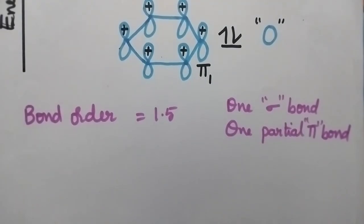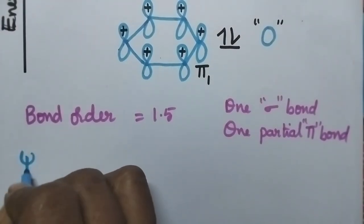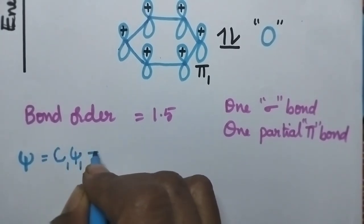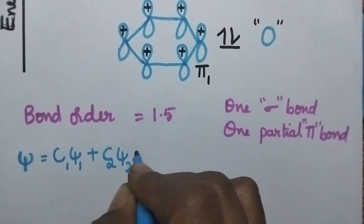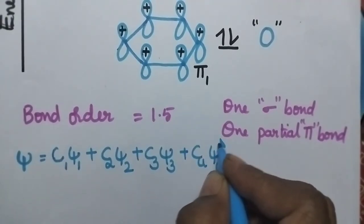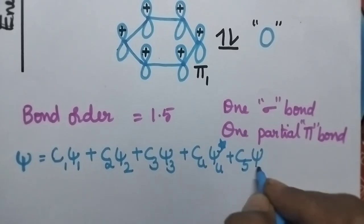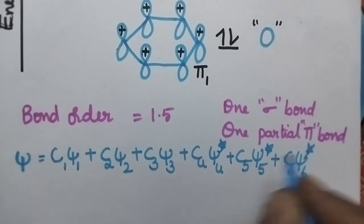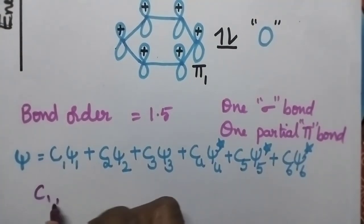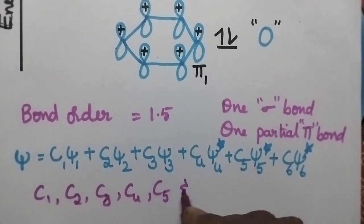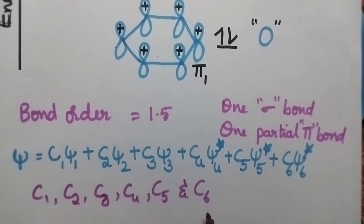The wave function of benzene can be calculated using the expression: xi equals c1·xi1 plus c2·xi2 plus c3·xi3 plus c4·xi4 star plus c5·xi5 star plus c6·xi6 star. Here, c1, c2, c3, c4, c5, and c6 are the coefficients of the corresponding molecular orbitals.